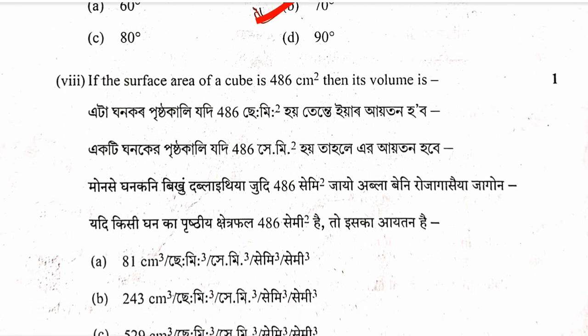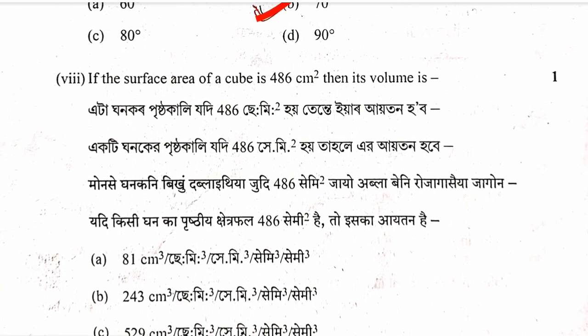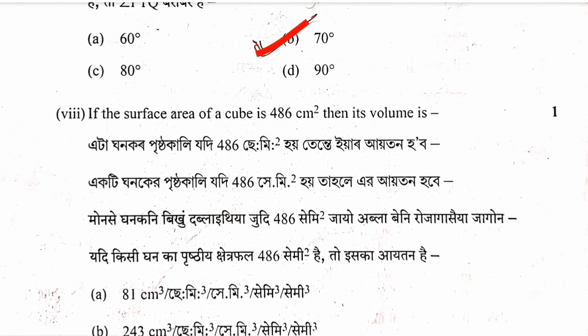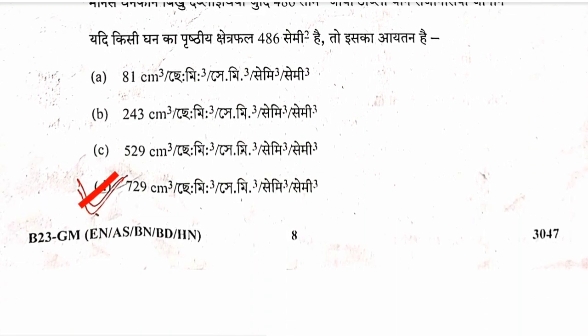Question 9: Find the volume of a cube with side a. Volume of cube equals a cubed. If side is 6, volume equals 6 cubed equals 216. The answer is 216 cubic centimeters. Option A is correct.